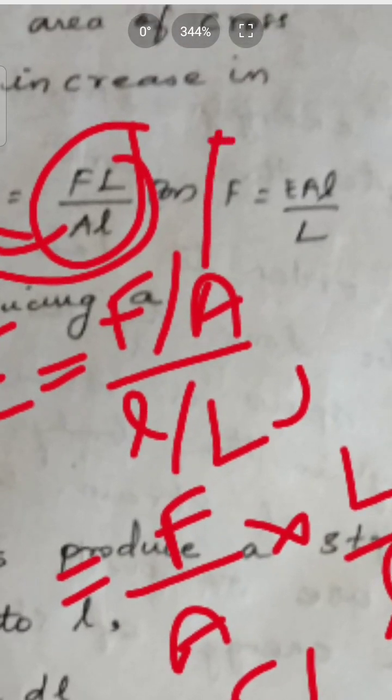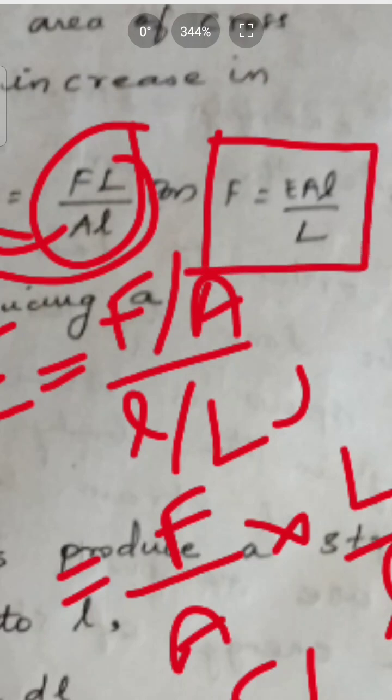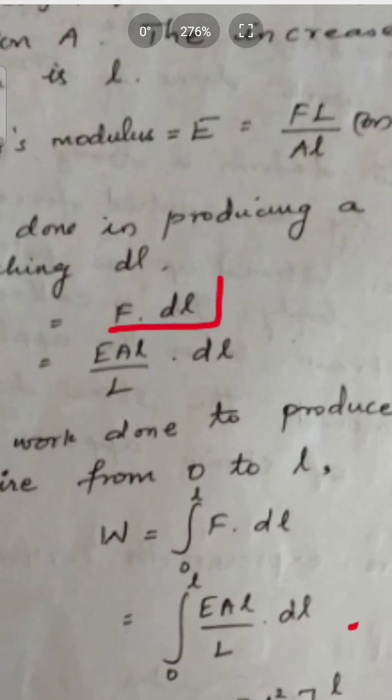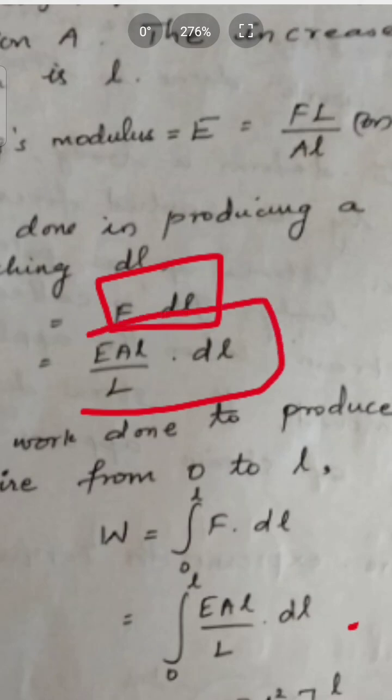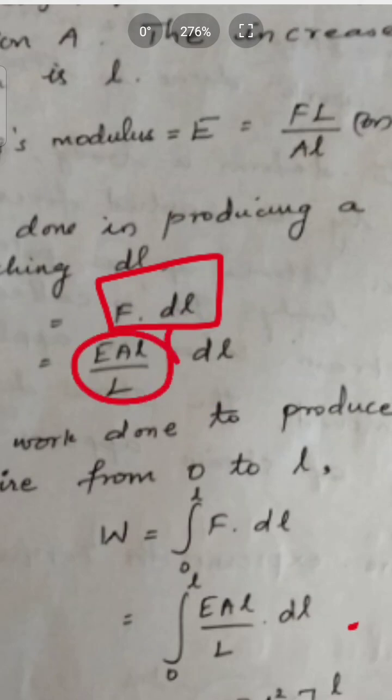F is equal to capital E times A times small l divided by capital L. The work done in producing a stretching of DL — where DL is a small incremental length extended — is F into DL, which equals E A small l by capital L into DL. This is the work done in producing a stretching DL.